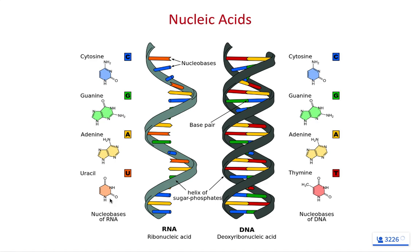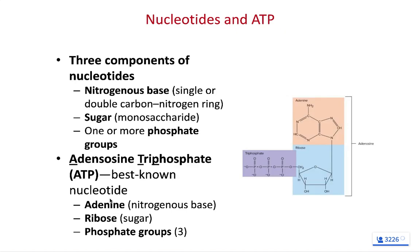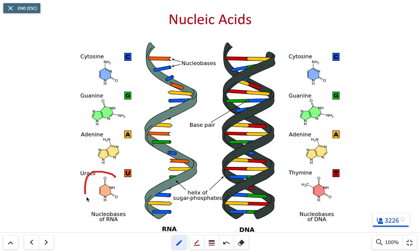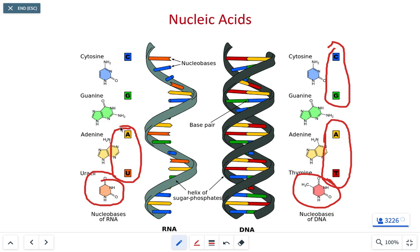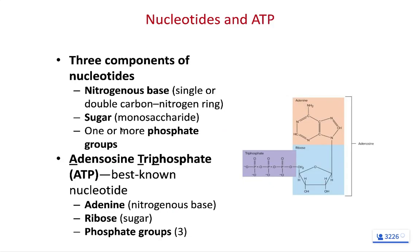DNA is double-stranded; RNA is single-stranded. A key difference: RNA has uracil where DNA has thymine. For base pairing rules: C always pairs with G, and A always pairs with T in DNA. In RNA, C still pairs with G, but A pairs with U instead of T. These base pairing rules will come back when we discuss protein synthesis. Every nucleotide has three components: a nitrogenous base, a sugar (ribose for RNA, deoxyribose for DNA), and a phosphate group.